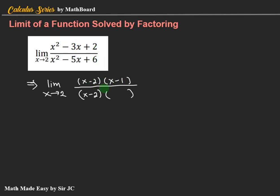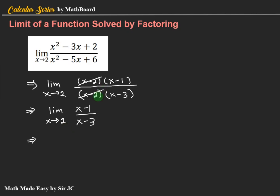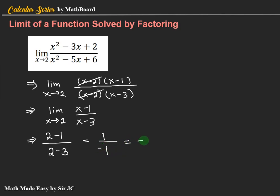For the denominator: x squared divided by x is x, and 6 divided by negative 2 is negative 3, giving x minus 2 times x minus 3. Check: negative 2x plus negative 3x is negative 5x — correct. We cancel x minus 2, leaving x minus 1 over x minus 3. Substituting x equals 2: 2 minus 1 over 2 minus 3 is 1 over negative 1, which equals negative 1. So the limit of the given function is negative 1.